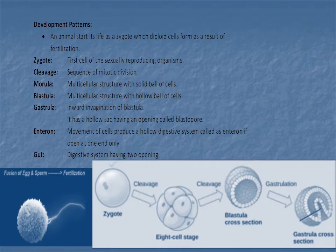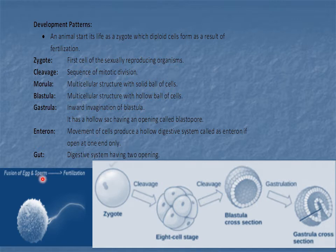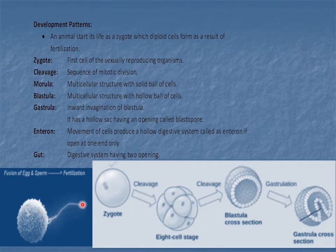The development pattern in animals: the animal starts its life with a zygote, which is a diploid cell formed as a result of fertilization. As shown in this figure, the egg — female reproductive cell — and sperm — male reproductive cell — are fused together to form a zygote. A zygote is simply defined as a fertilized egg.